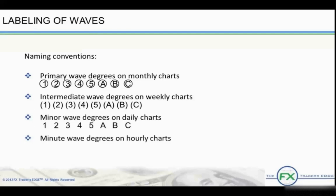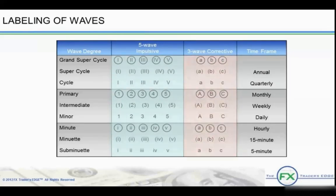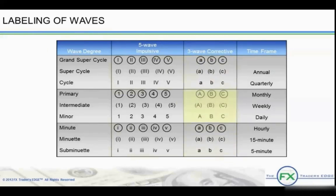Finally, minute wave degrees, found on the hourly charts, are noted as circled lowercase roman numerals 1 through 5, and lowercase A, B, and C. The naming convention used is consistent with Elliott's labeling, as he named 9 degrees of waves. Each wave degree subdivides into waves in the smaller degree. Elliott also added degrees as necessary. The numbers label the impulsive waves and the letters label the corrective waves. The impulsive waves alternate between roman numerals and arabic numerals. Labeling below minor degrees is in lowercase roman numerals. Labeling above primary degrees is in uppercase roman numerals. The corrective waves are labeled in lowercase for the roman numerals, and in uppercase for the arabic numerals.